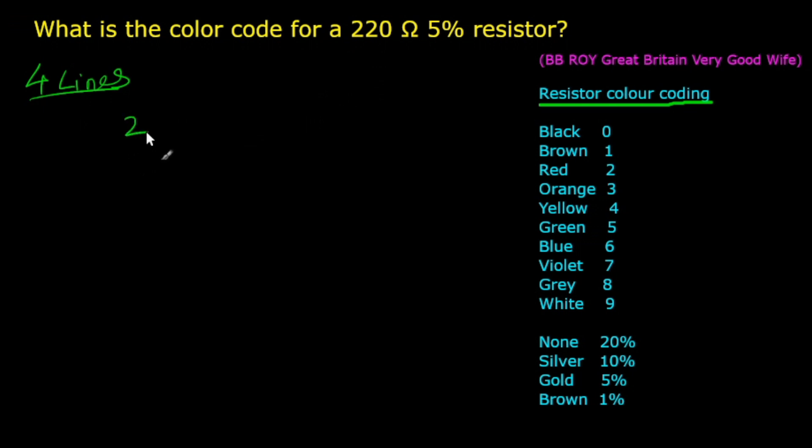The given value is 220 ohm. Write down the first digit and the second digit, which is the same. The third digit is the multiplier, so we need to find the value in 10 to the power which gives the given resistor value, that is 220.